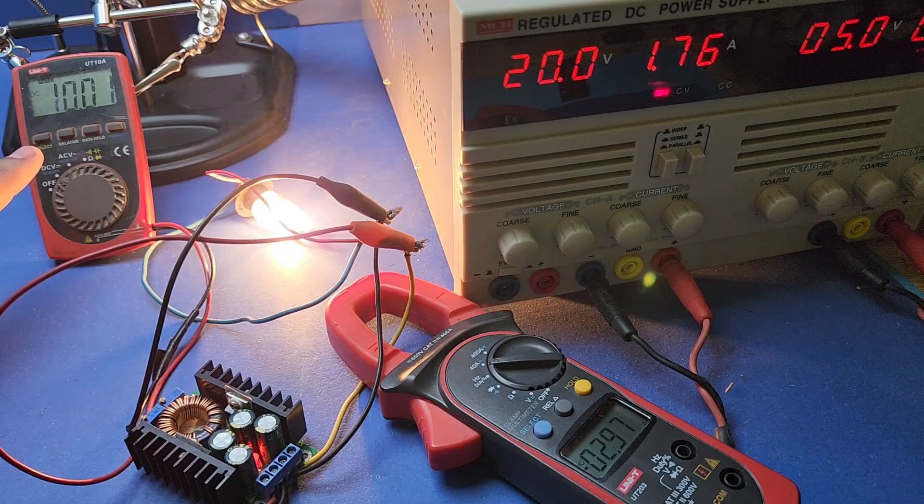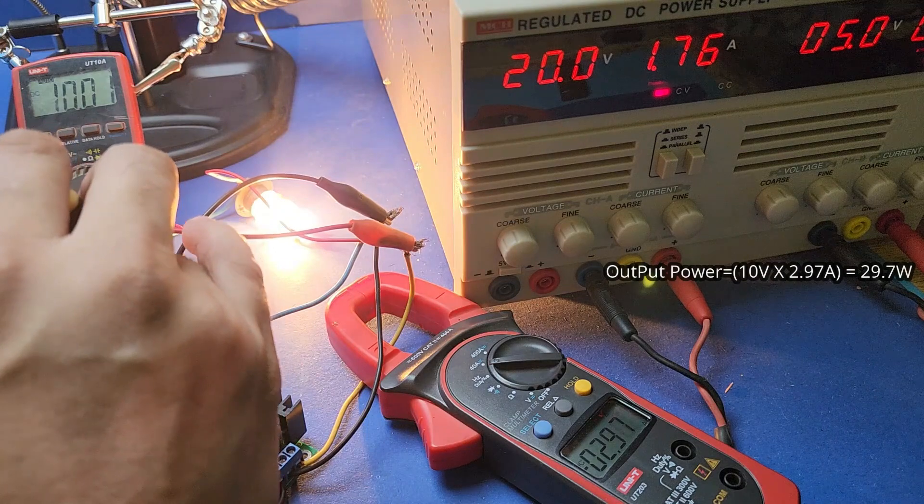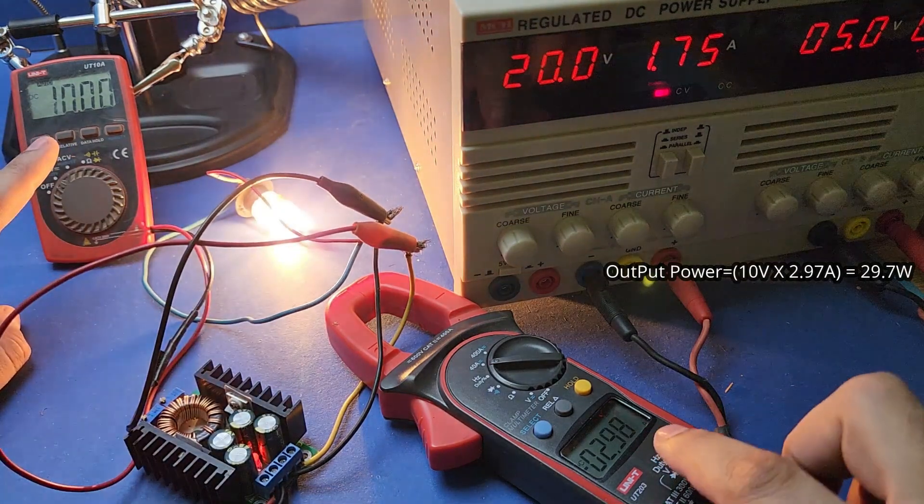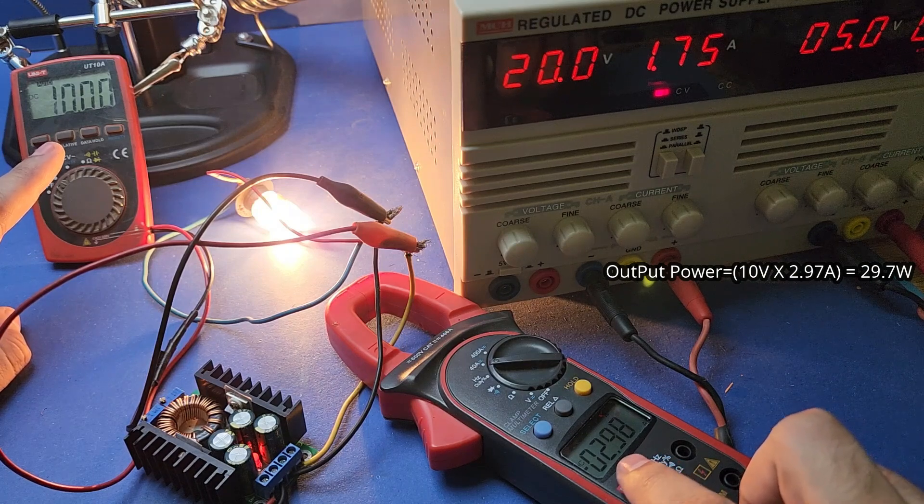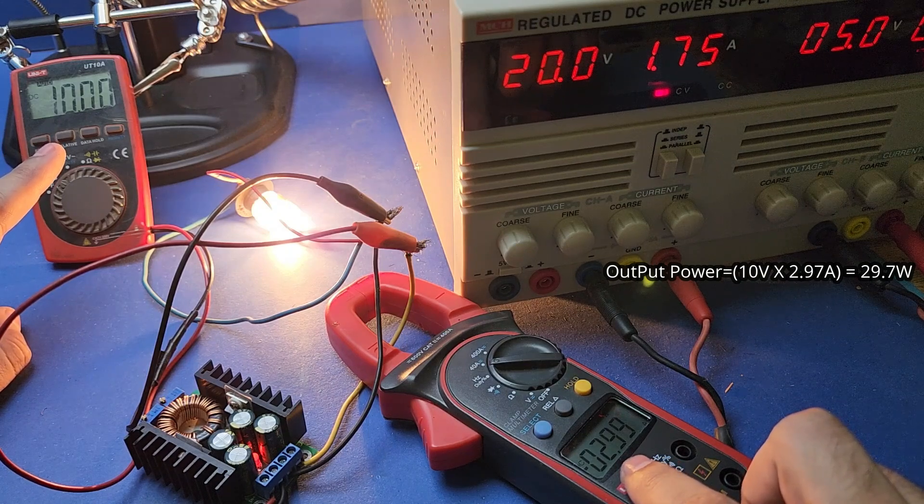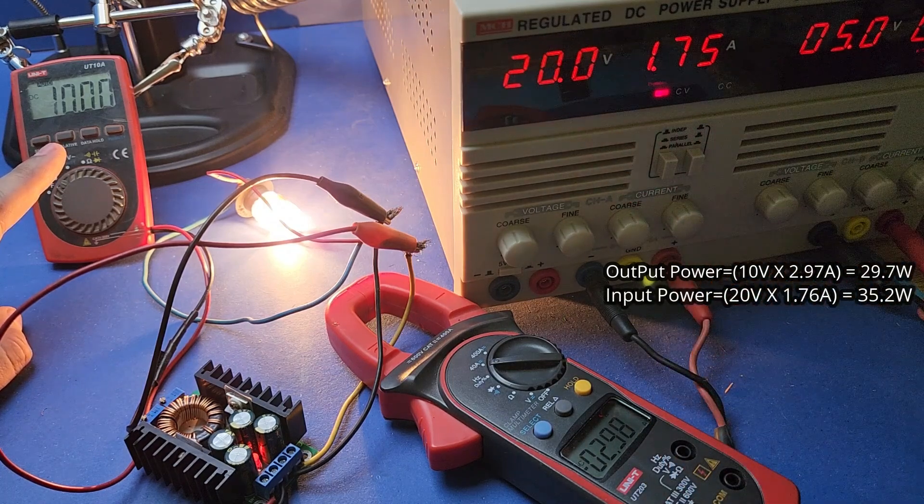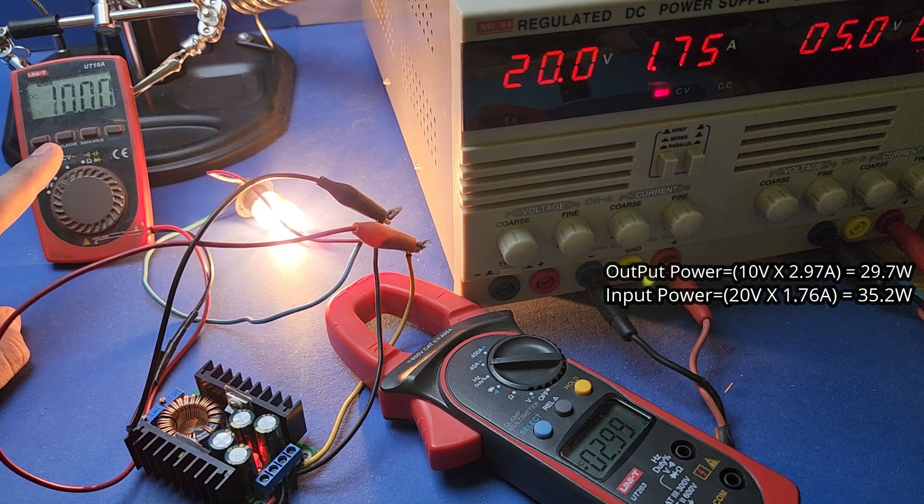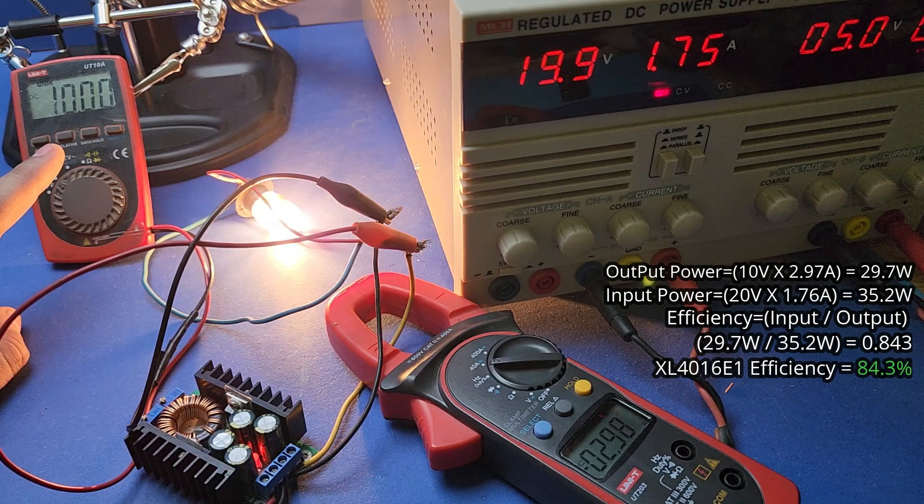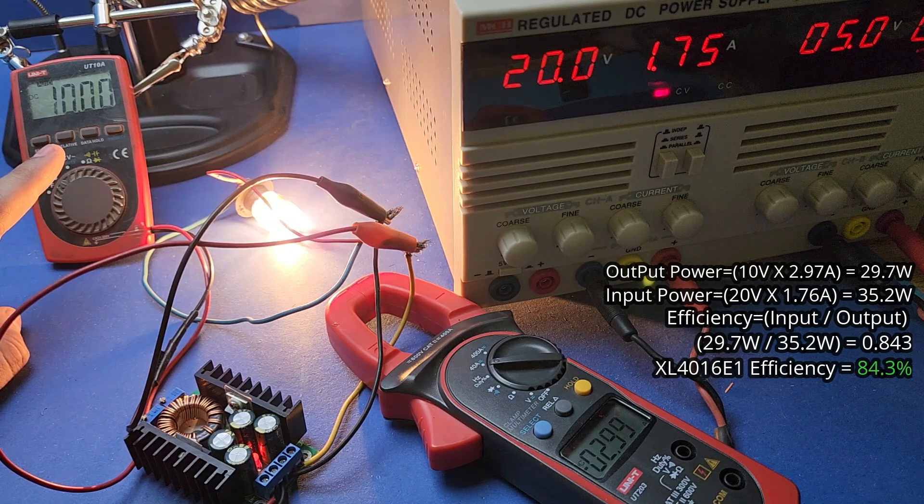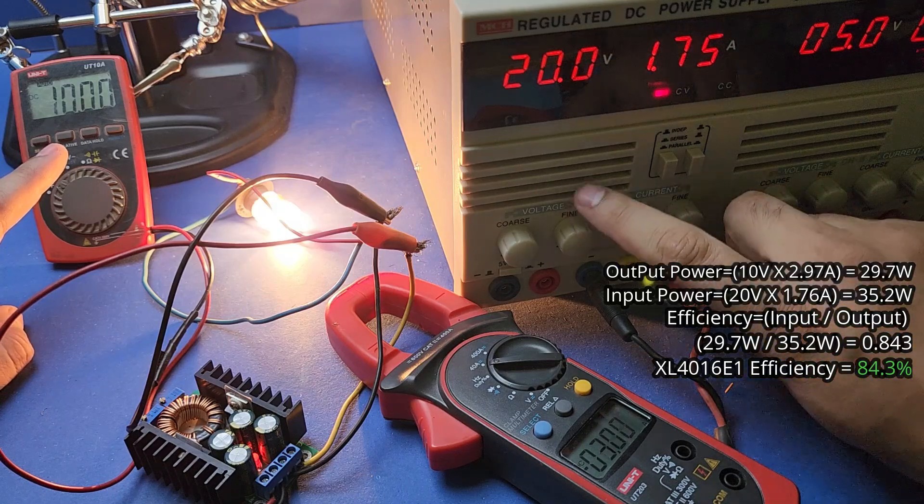Now 10 volts multiplied by 2.97 amps is equal to 29.7 watts, which is the output of our XL4016. If we multiply 20 volts with 1.76 amps then we get 35.2 watts, so our XL4016 is getting 35.2 watts as input. Now if we divide 29.7 by 35.2, then we get 0.843, which means our XL4016 module is giving us an excellent efficiency of 84.3% at 20 volts.